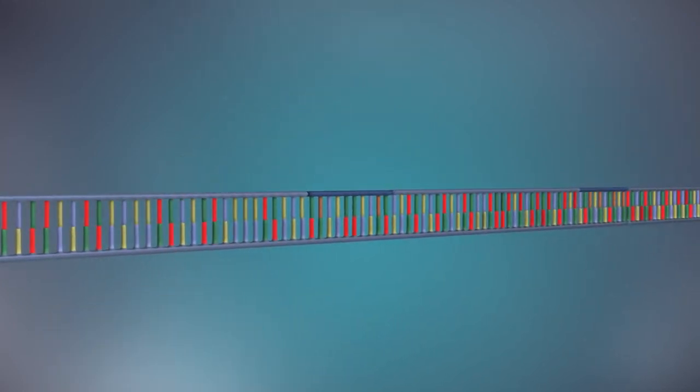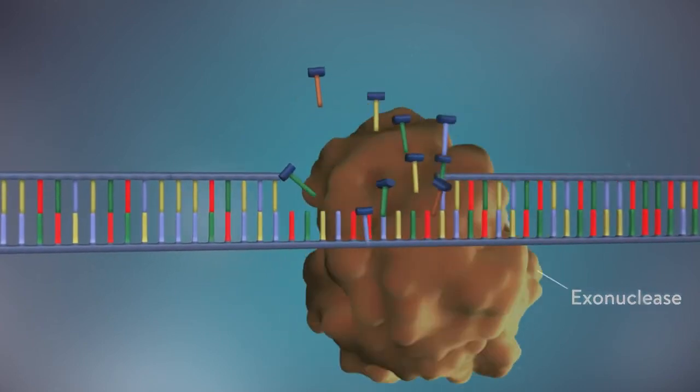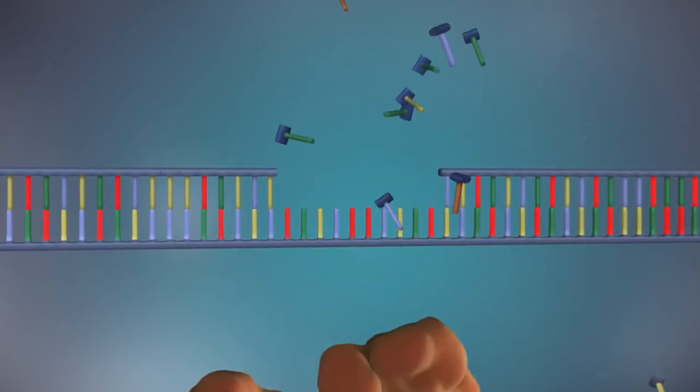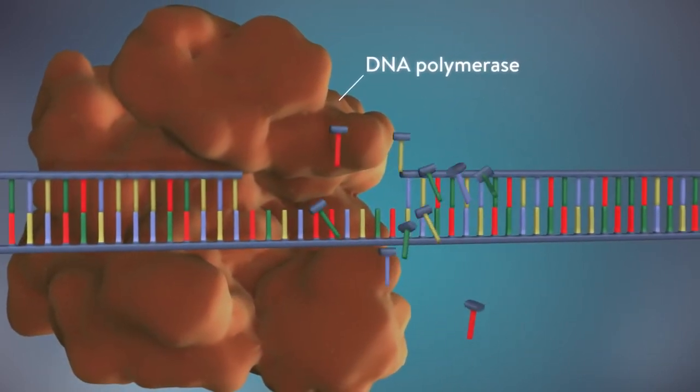Once the new DNA has been made, the enzyme exonuclease removes all the RNA primers from both strands of DNA. Another DNA polymerase enzyme then fills in the gaps that are left behind with DNA.